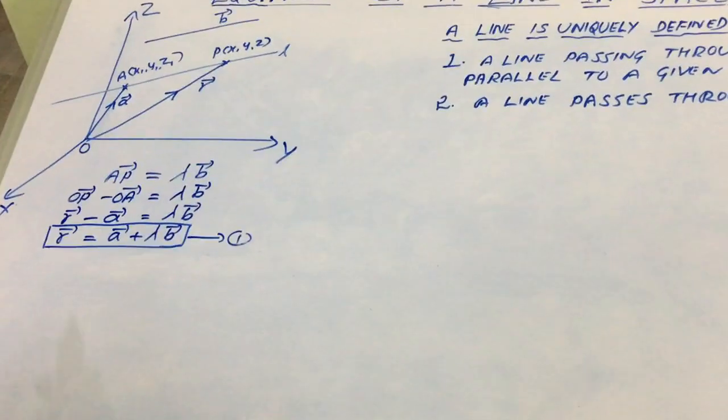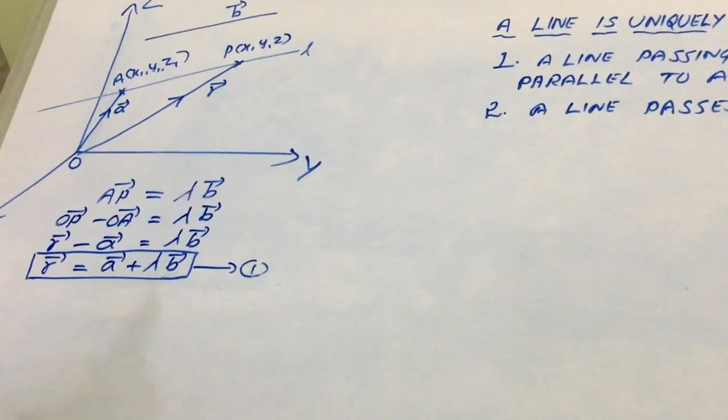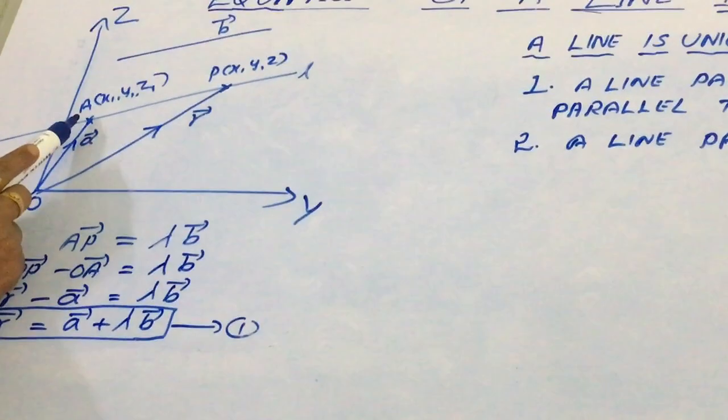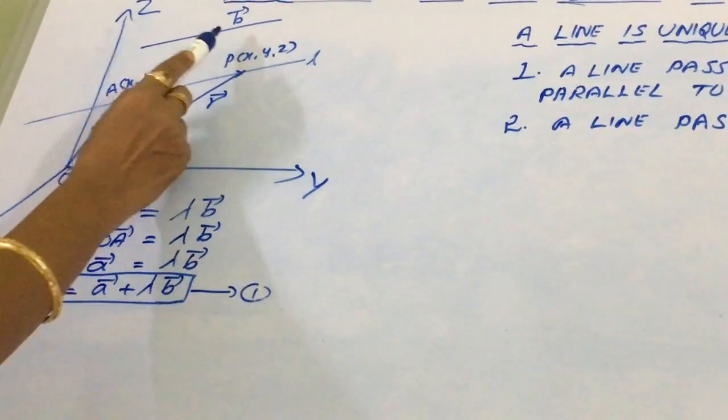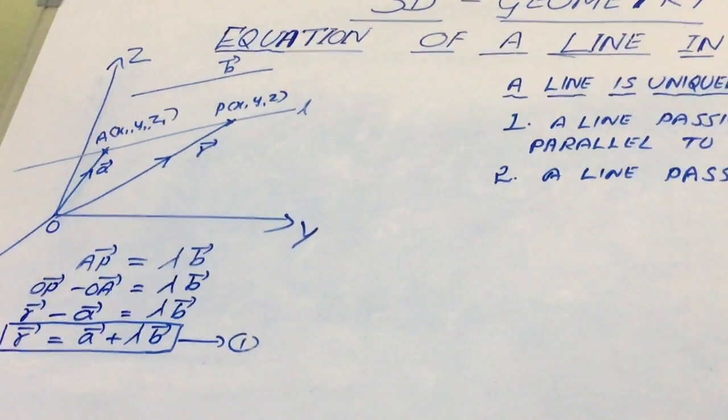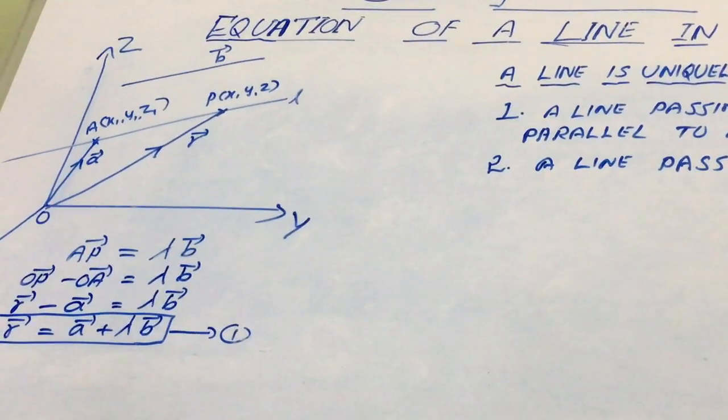In the previous video, we considered the vector equation of a line passing through point A of (x1, y1, z1) parallel to the given vector B. Now, let us consider the Cartesian form of the same.